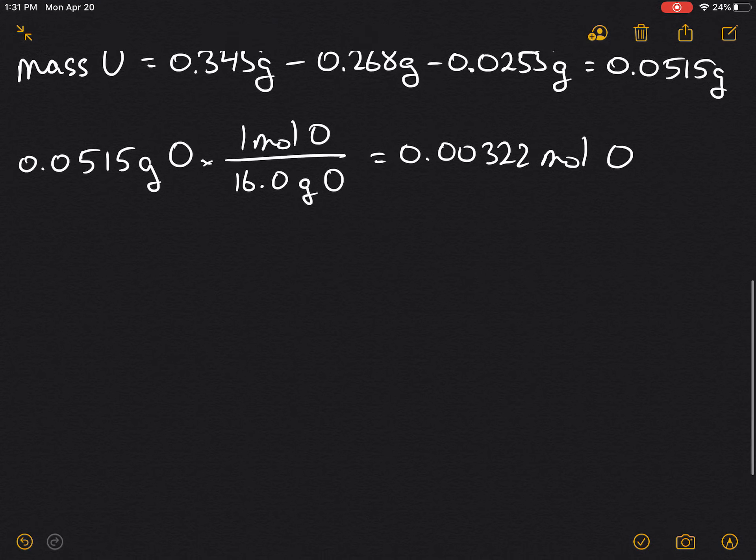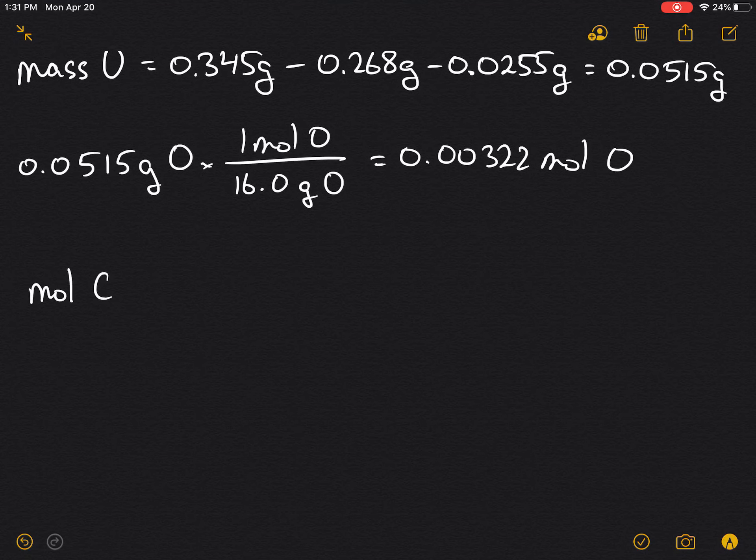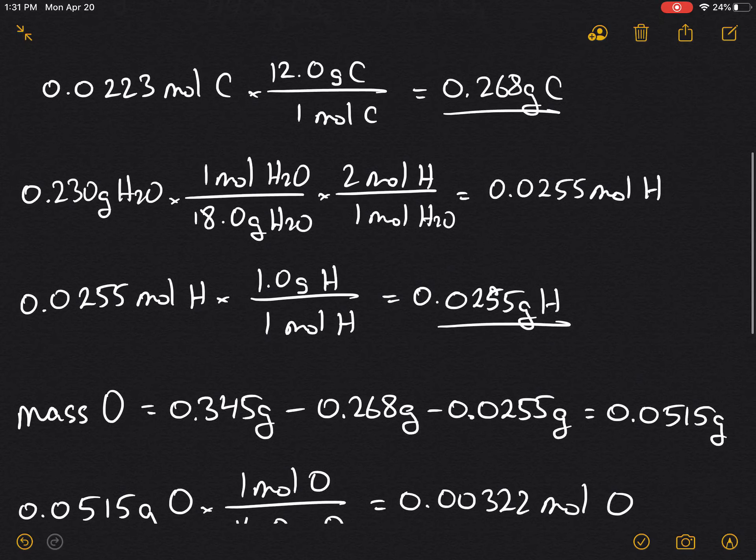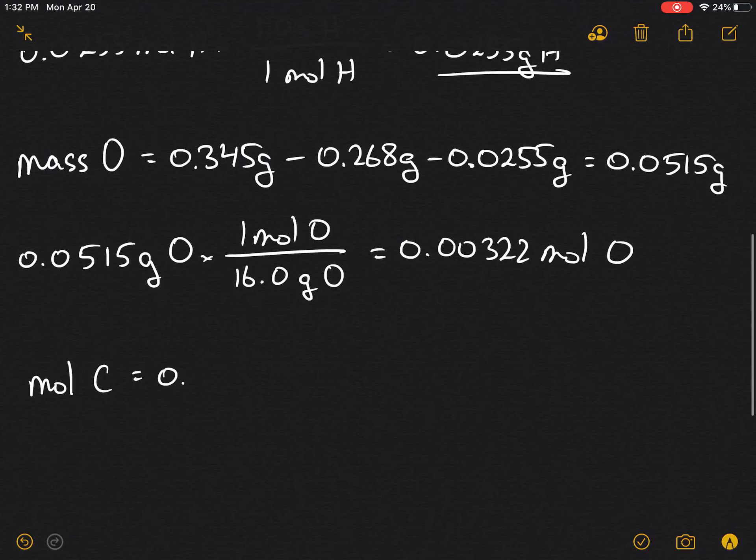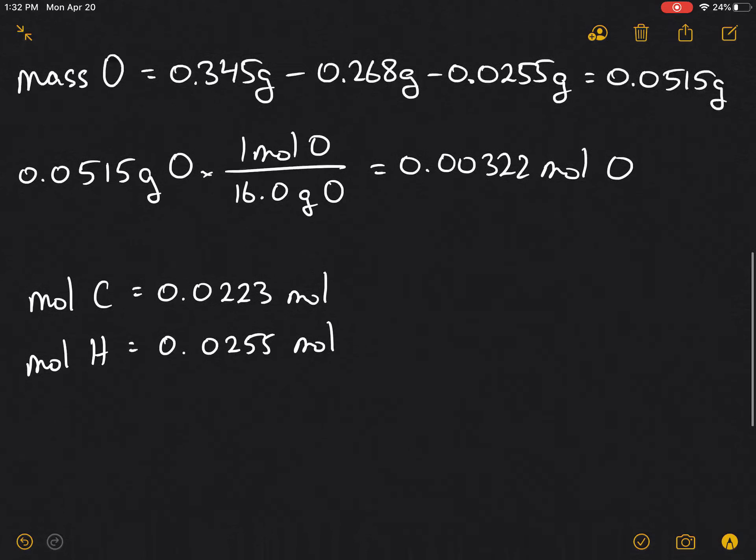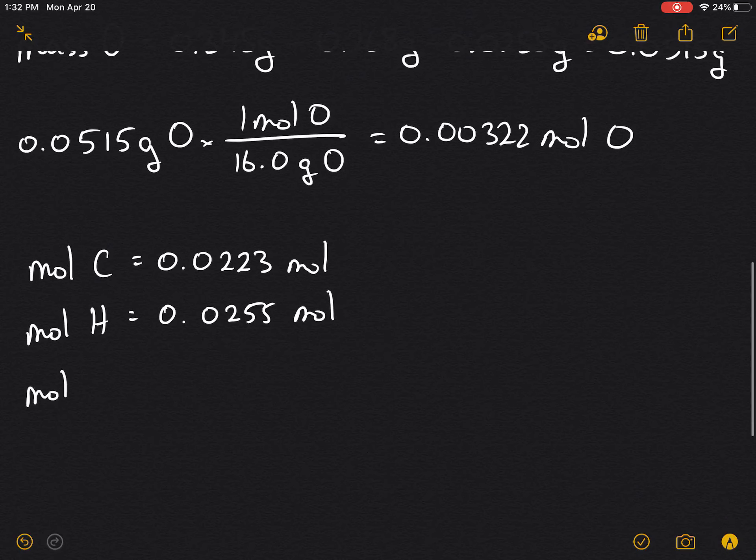So now let's find the empirical formula. We have the moles of carbon which are 0.0223 moles, moles of hydrogen, and the moles of oxygen which is 0.00322 moles.